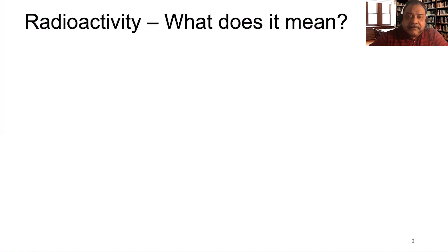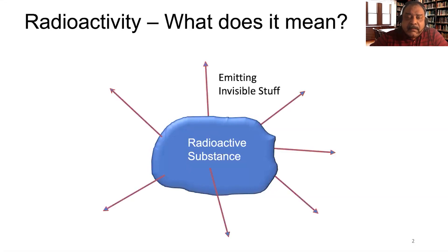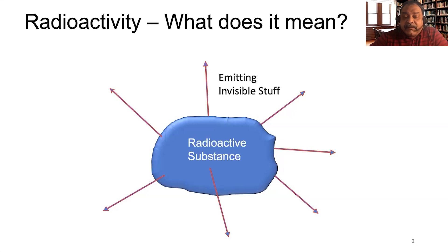Radioactivity — what does it mean? Well, if we have a radioactive substance, that means that the substance is emitting invisible stuff. The radiation can do harm; it can cause medical problems and internal problems. But the radiation could also be harnessed and used for useful purposes, such as providing energy and doing medical diagnostics.